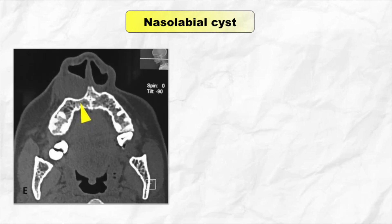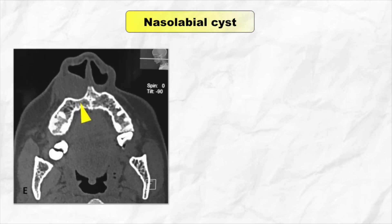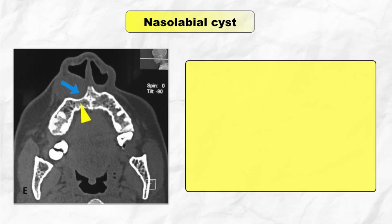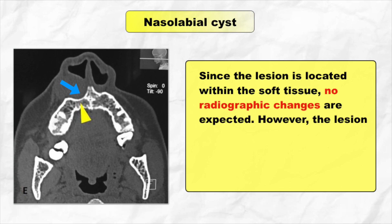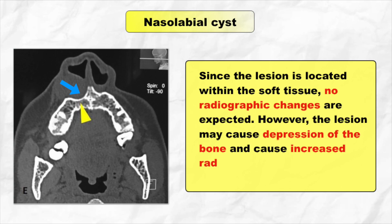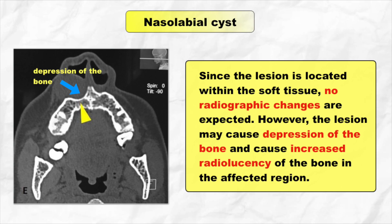Next point is about nasolabial cyst. Since the lesion is located within the soft tissue, no radiographic changes are expected. However, the lesion may cause depression of the bone and increased radiolucency of the bone in the affected region. Here in this image, you can see the depressed area of the bone.